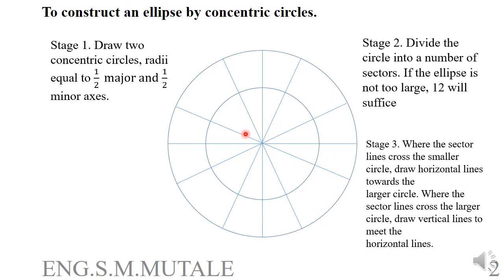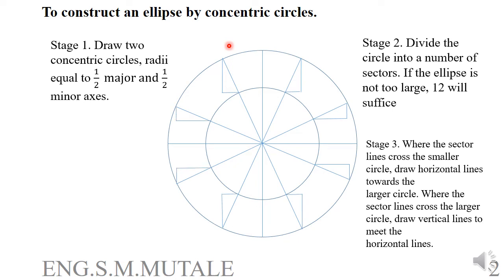Step three: where sector lines cross the smaller circle, draw horizontal lines toward the larger circle. Where the sector lines cross the larger circle, draw vertical lines to meet the horizontal lines. The horizontal lines should be parallel to the major axis, and the vertical lines should be parallel to the minor axis. These lines must not be drawn at an angle.